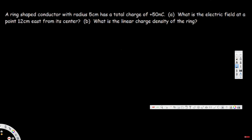Let's look at this problem. A ring-shaped conductor with radius 5 centimeters has a total charge of 50 nanocoulombs. What is the electric field at a point 12 centimeters east from its center? And what is the linear charge density of the ring? Let's go ahead and draw the diagram for this one.